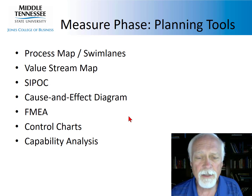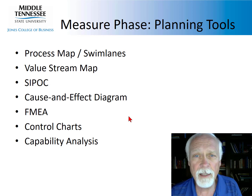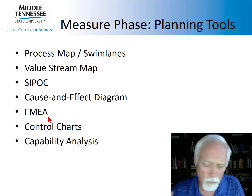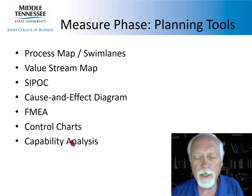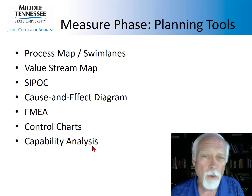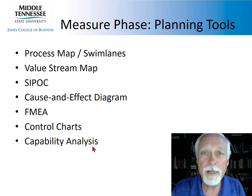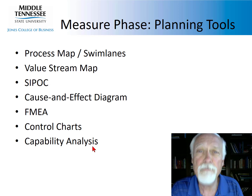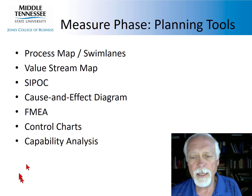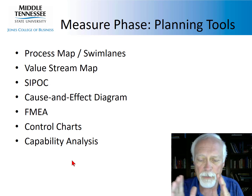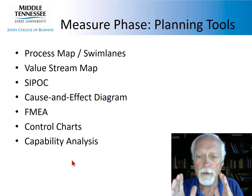If the problem identified in the define stage is a risk issue, then failure modes and effects analysis (FMEA) gives us a relative measure of different risks we're facing, using risk priority numbers. Control charts and capability analysis go together. A control chart tells us whether our system is stable — whether it's an operations process or a measurement process. Then we ask: is it capable? Capable means the variation inherent in the process is acceptably within the tolerance limits of the process.